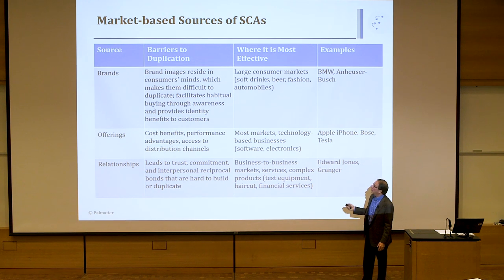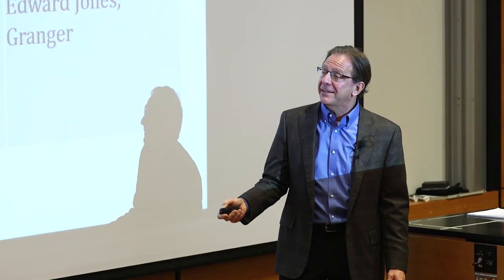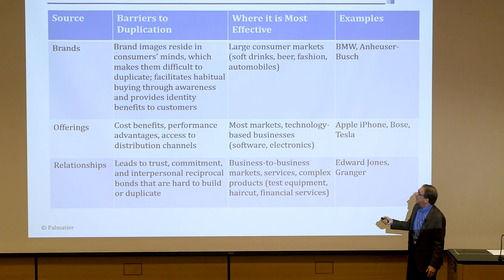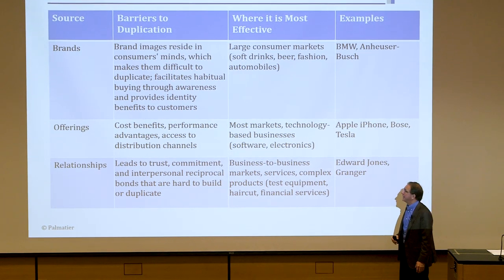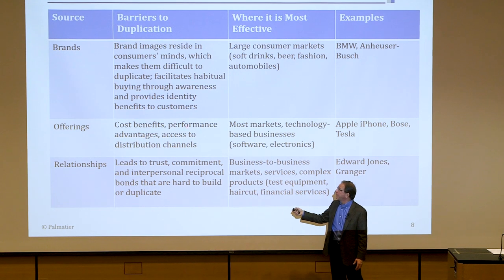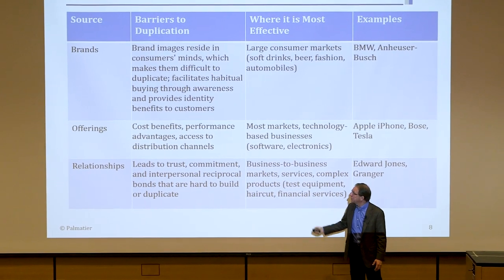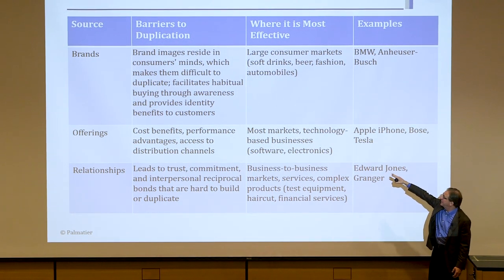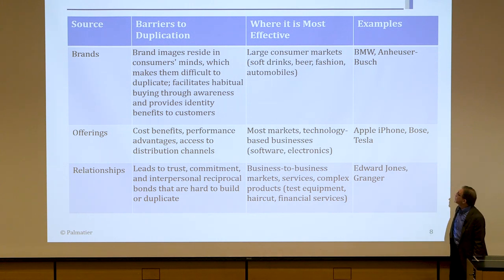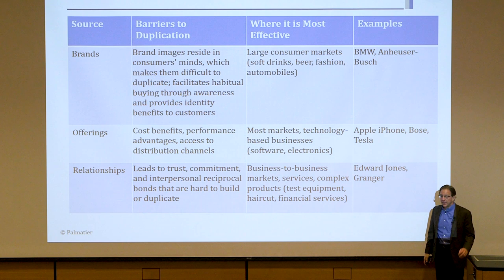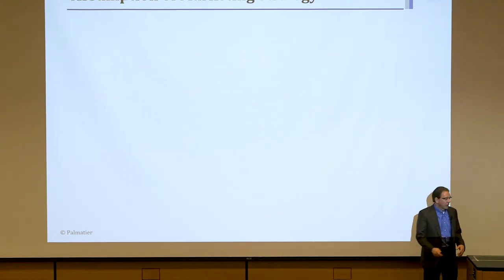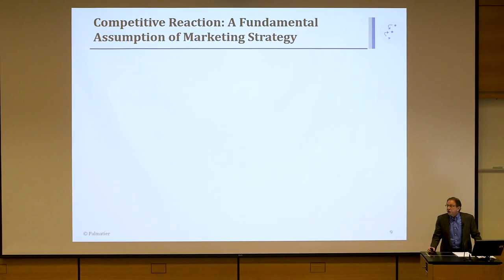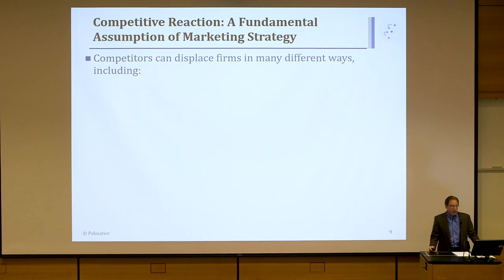This is an overall grid that goes through each of the three market-based assets as a source of competitive advantage. It talks about the barriers to duplication. Brand advantage resides in the consumer's mind — hard to copy. Sometimes products have performance benefits or patents. Relationships lead to trust and commitment. We look at where each is most effective — consumer, business, or business-to-business — and then we give a few examples of firms that do this.